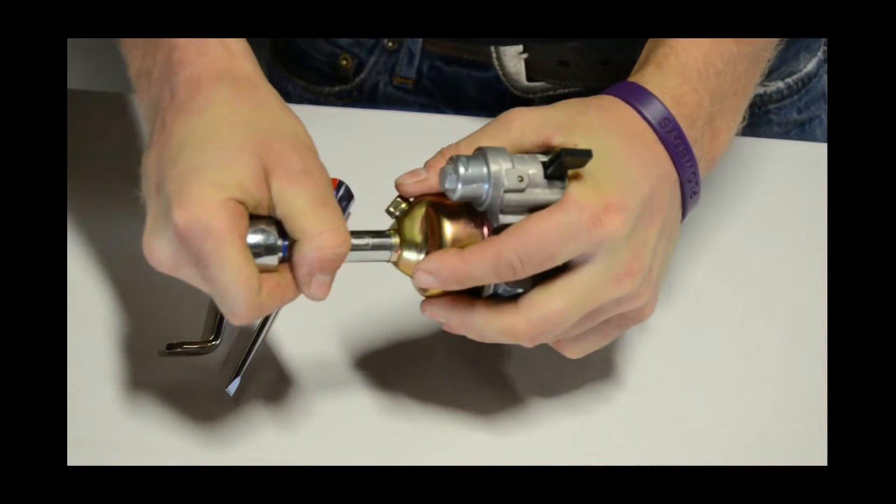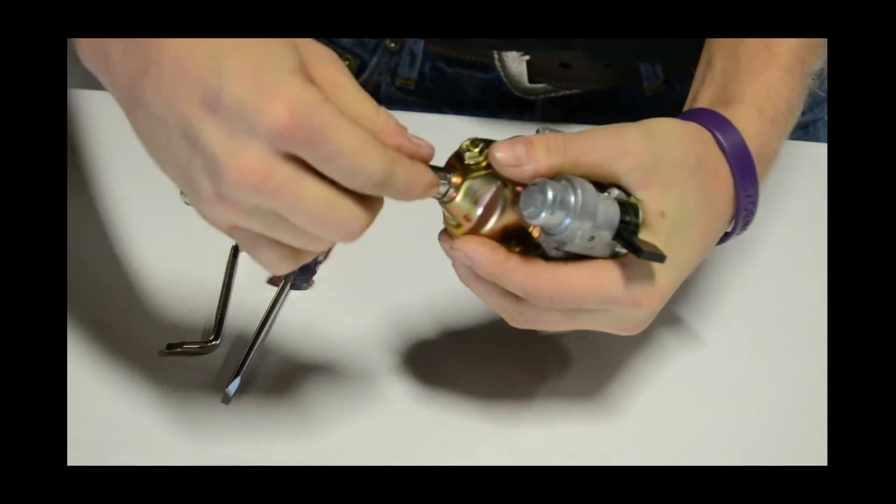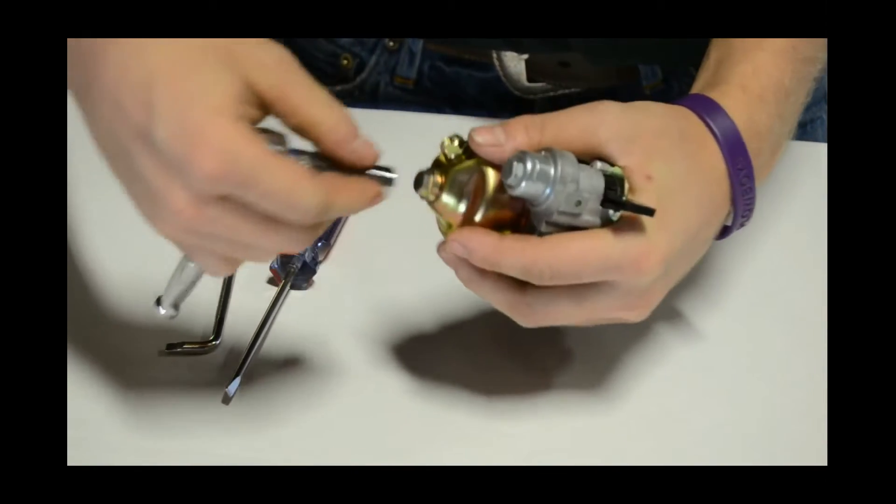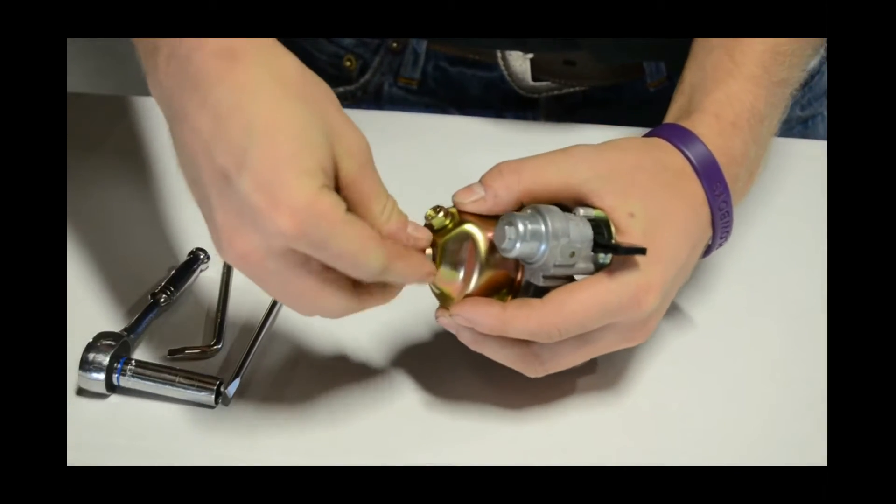Now first off, you're going to remove the float bowl bolt. Once you get this loose, you'll be able to remove the float bowl.